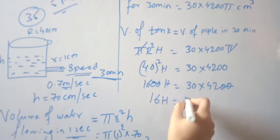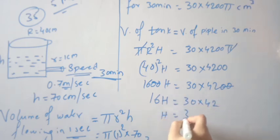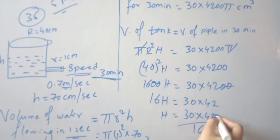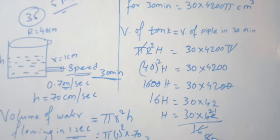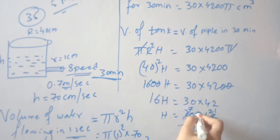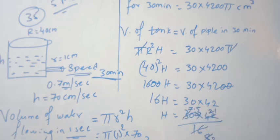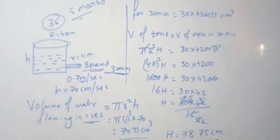H equals 30 times 4,200 divided by 1,600. Simplifying: cancel out the zeros — 30 times 42 divided by 16, which further reduces. After cancellation: H equals 78.75 centimeters. So the water level in the cylindrical tank will rise by 78.75 centimeters in 30 minutes, that is, in half an hour.